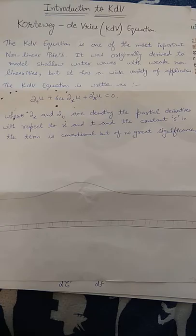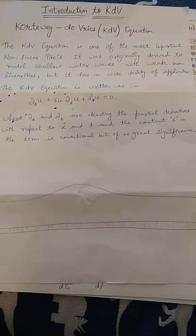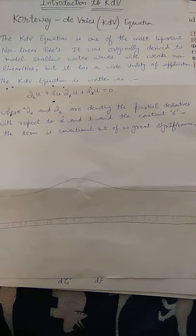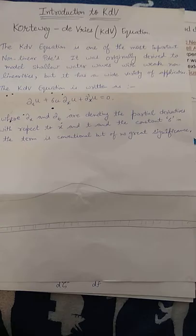The equation for KdV is written as curl_T u plus 6u curl_X u plus curl^3_X u equals zero. Here we can clearly see that curl_X and curl_T are denoting the partial derivatives with respect to X and with respect to T. The constant 6 in the term is conventional but of no great significance.